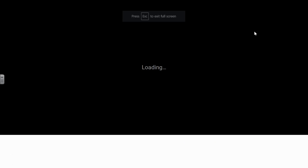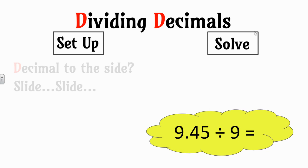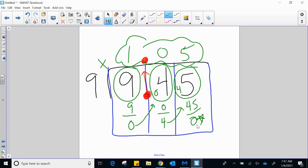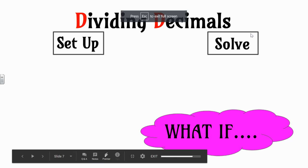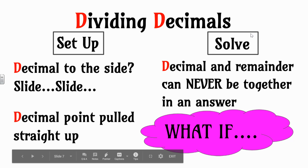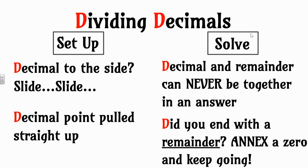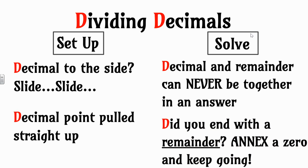There is a very important thing I told you: a decimal and a remainder can never be together in an answer. We just solved two problems where that didn't happen — there was no remainder. However, what if we come across a problem where we do have a remainder? We're not allowed to have a remainder and a decimal in the same answer. So if that ever happens, if you end with a remainder, simply annex a zero into the next place value and keep going.